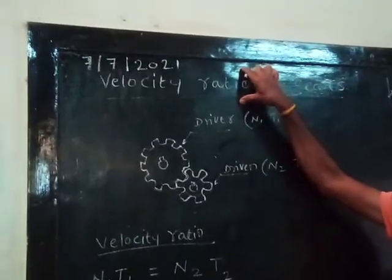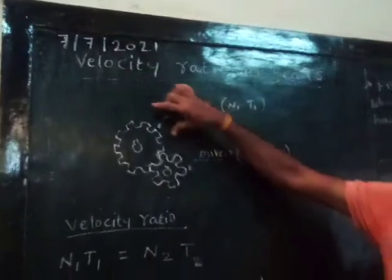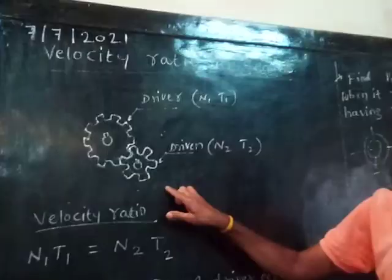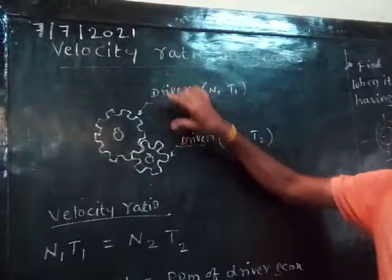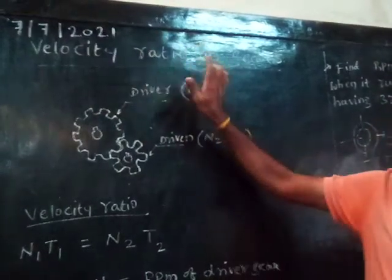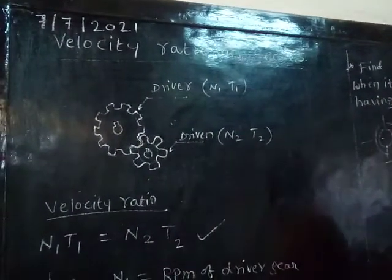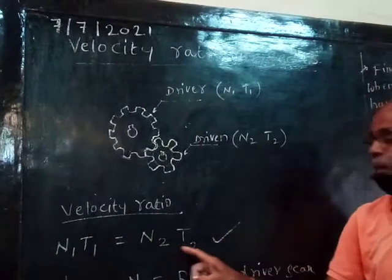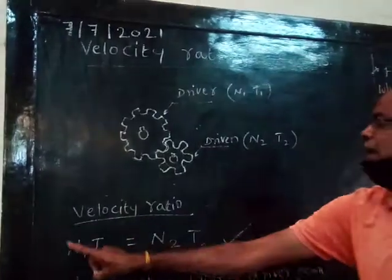We will talk about the driver gear and the driven gear. One gear transmits power to the other gear. The equation is n1 times t1 equals n2 times t2, which is the velocity ratio equation.